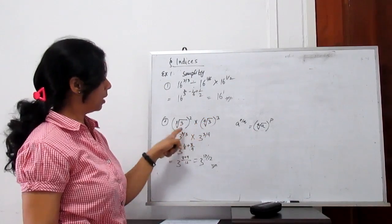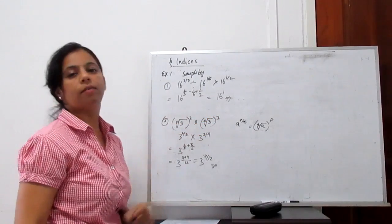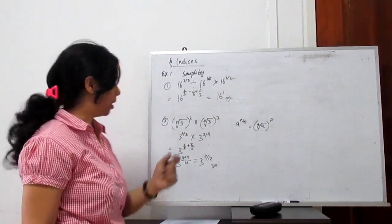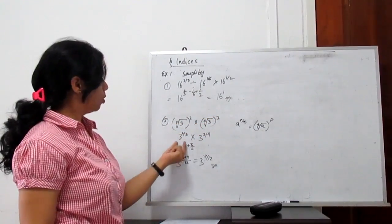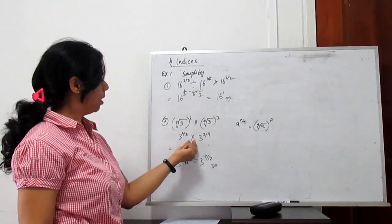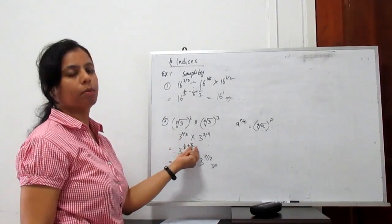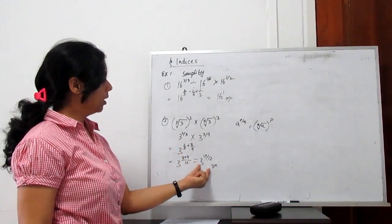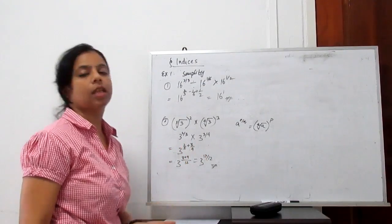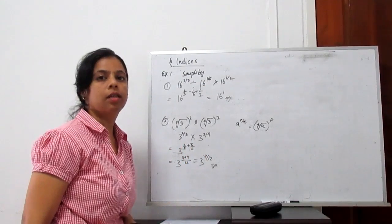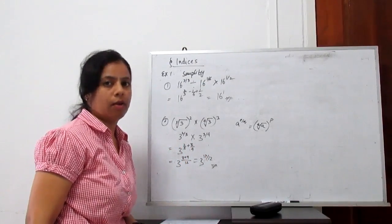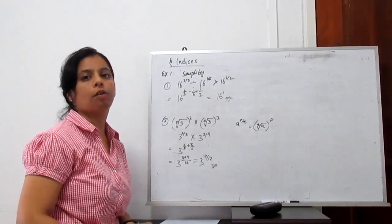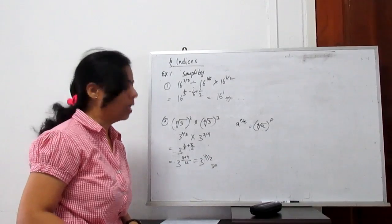Since the bases are the same, the indices are added: 3 to the power 2 by 3 plus 3 by 4. Taking the LCM, we get 3 to the power 17 by 12. That is the simplification of the given index expression.